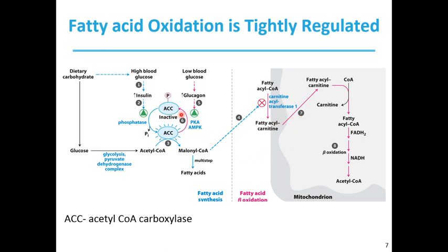When blood glucose levels drop between meals, glucagon is released, which activates cAMP-dependent protein kinase A. Protein kinase A phosphorylates ACC, making it inactive. As a result, the concentration of malonyl-CoA falls, the inhibition of fatty acid entry into mitochondria is relieved, and fatty acids enter the mitochondrial matrix and become the major fuel. Because glucagon also triggers the mobilization of fatty acids in adipose tissue, a supply of fatty acids begins to arrive in the blood.